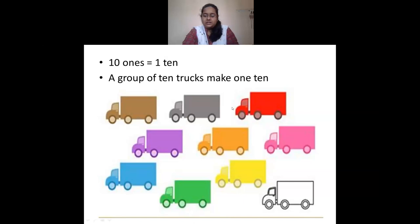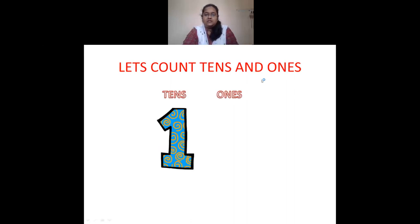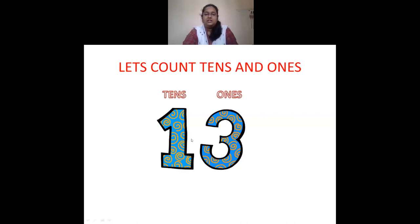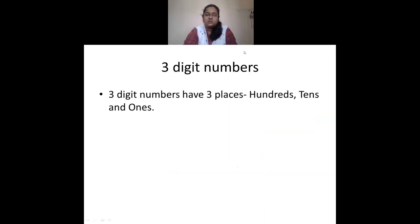Ten ones together make one ten. A group of ten trucks makes one ten. Then we counted tens and ones. For example, one in the tens place and three in the ones place means one ten and three ones. Here we have nine tens and nine ones.